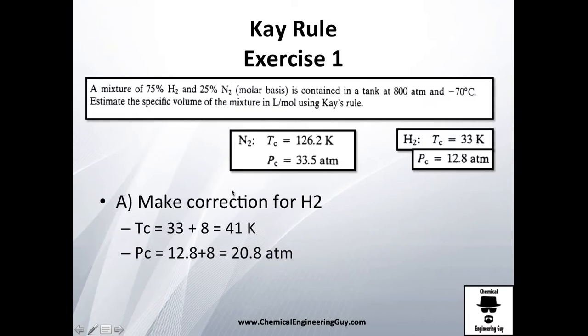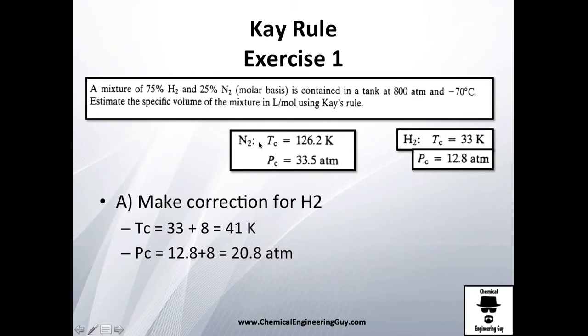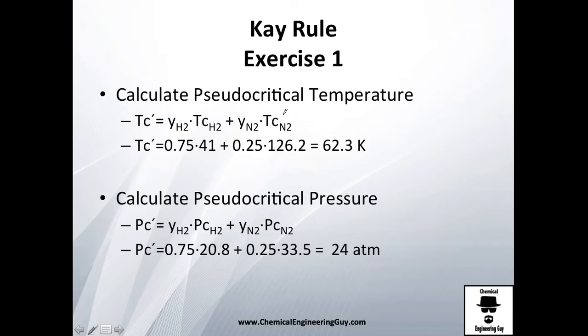Let's calculate the pseudo-critical temperature of the mixture. We need the composition, which is 75% hydrogen and 25% nitrogen, and the critical values. The corrected value for hydrogen is 41 Kelvin, and for nitrogen it's 126.2 Kelvin. Do this operation and you get your new critical temperature for this mixture: Tc' = 62.3 Kelvin.